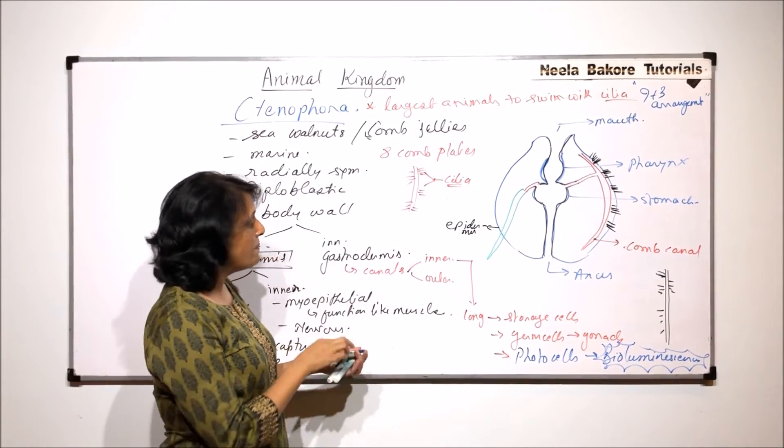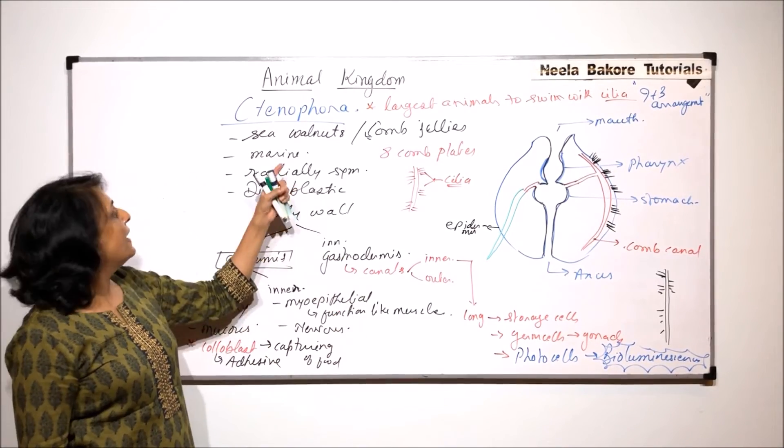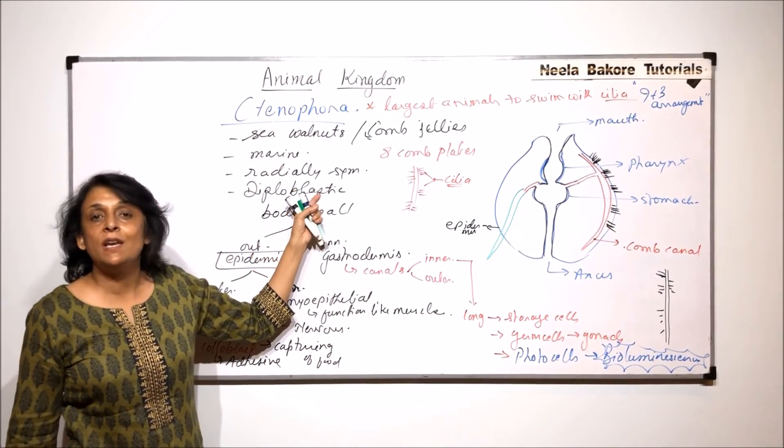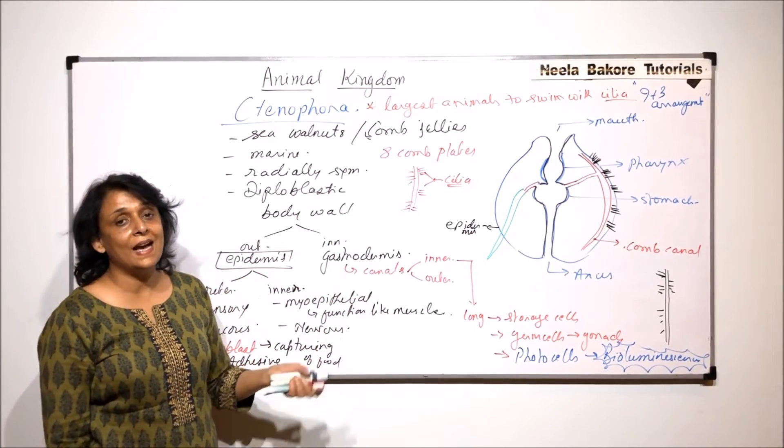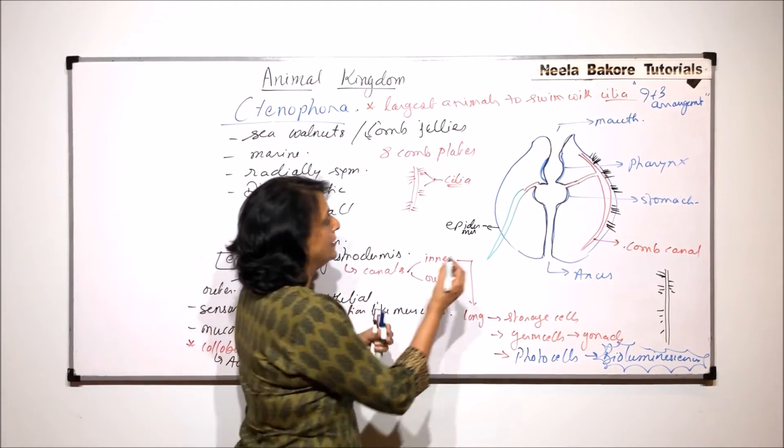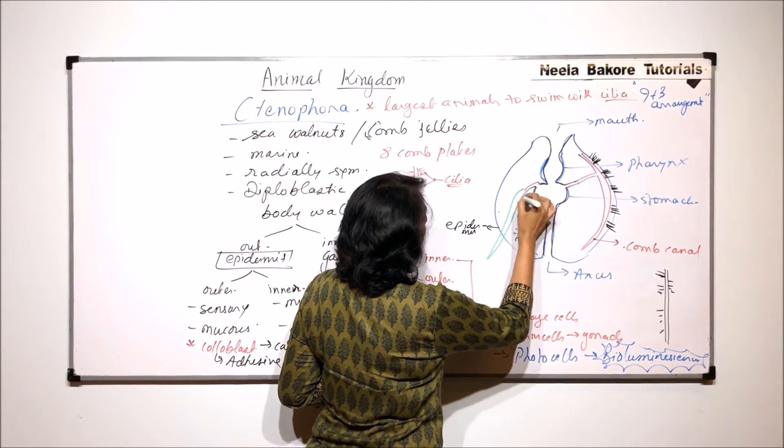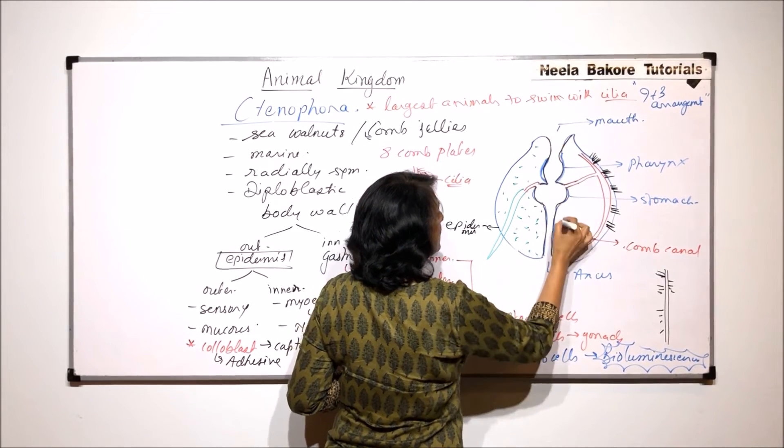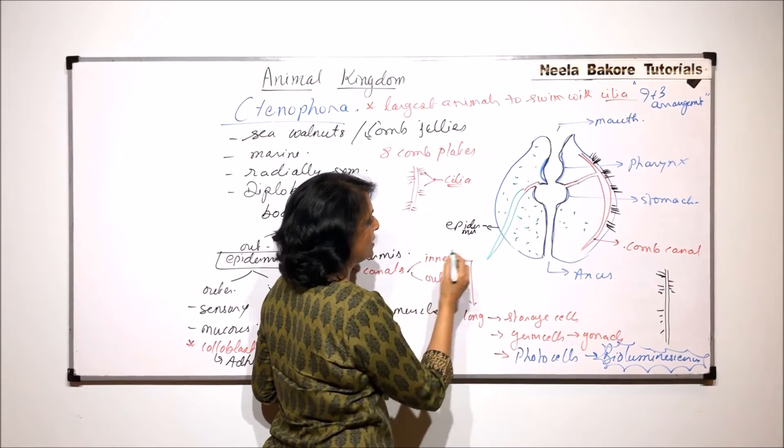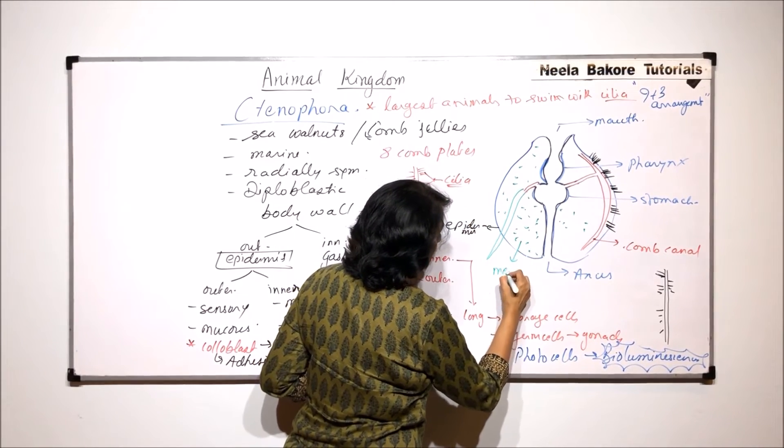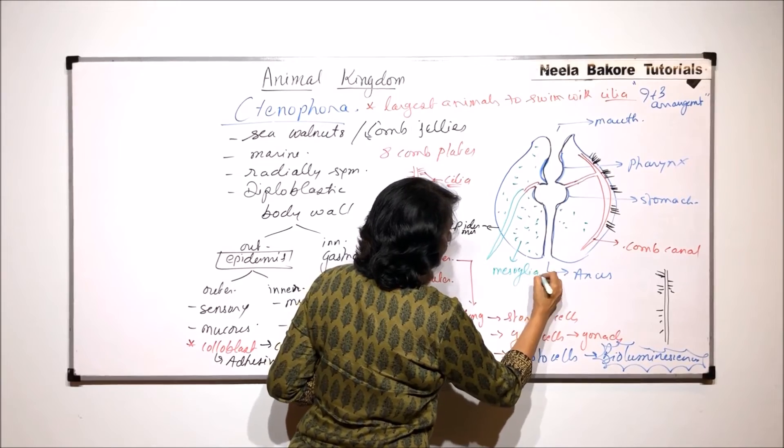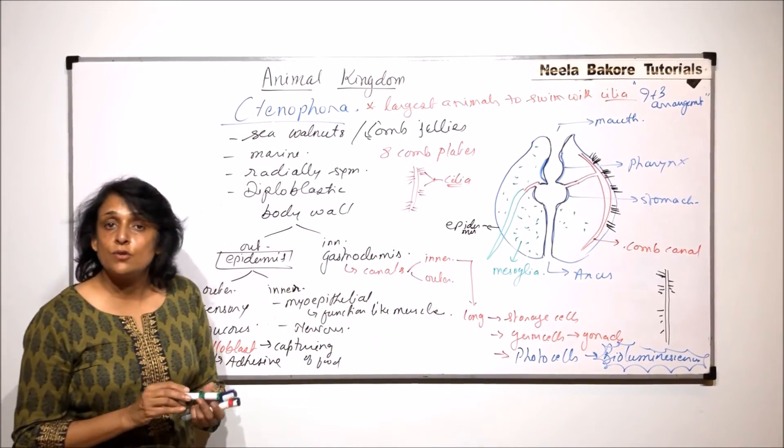So there are so many different layers which are present, and that's why I said some scientists believe that probably these are triploblastic. This part, that means the material or the tissue which is between the two layers - epidermis and gastrodermis - is known as mesoglea. So this is the structure.